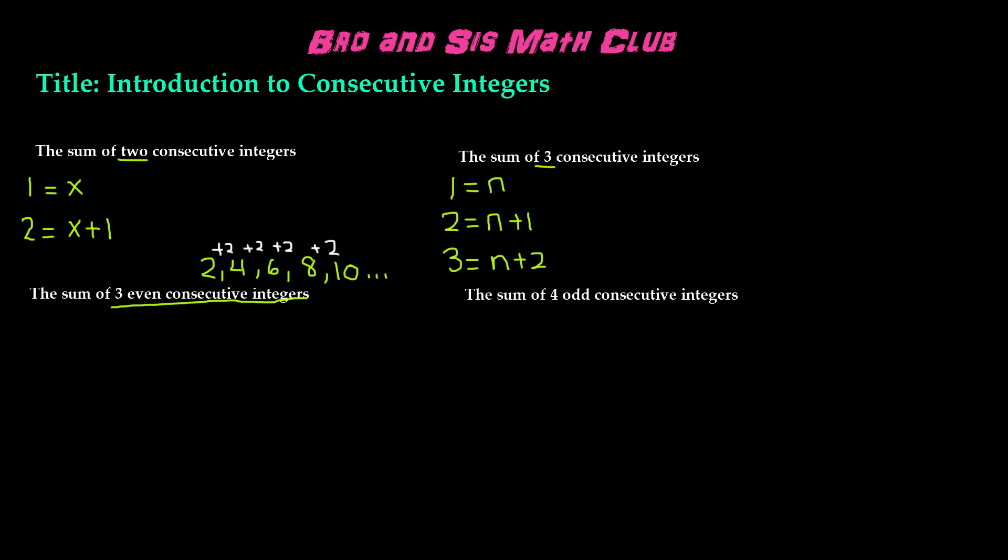We're going to have first, second, and third. The first is going to stay the same as the variable. Let's say we're using the variable m. The second, instead of being m plus 1, will be m plus 2. And the third one will be m plus 4, because it has to add by 2s.